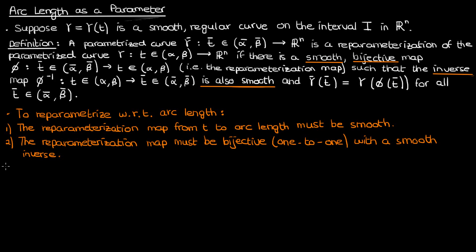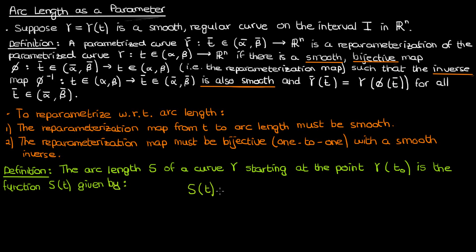We'll begin this reparametrization process by recalling the definition of arc length. Remember from a previous video that the arc length s of a curve γ starting from the point γ(t₀) is the function s(t) given by the integral from t₀ to t of the magnitude of γ̇ as a function of u with respect to u. I'll call this equation 1.